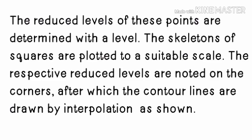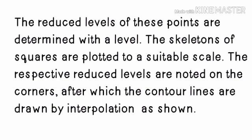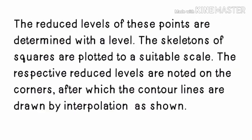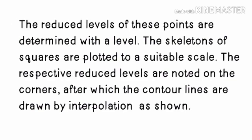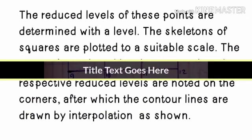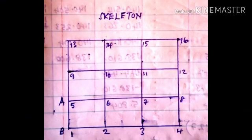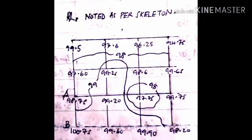The skeleton of the squares is plotted to a suitable scale. The respective reduced levels are noted on the corners, after which the contour lines are drawn by interpolation as shown. This is our skeleton on which these levels are noted and the contour lines are drawn.